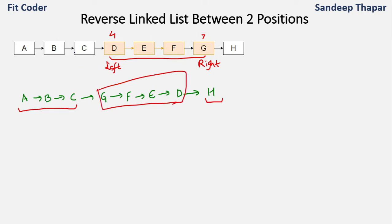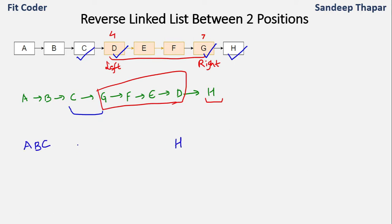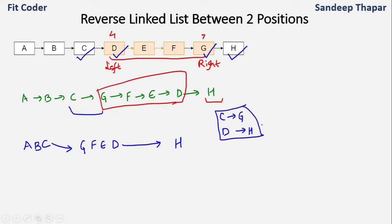If we look carefully, we need four pointers for this entire operation: a pointer to C (the node before left), a pointer to D (the left node), a pointer to G (the right node), and a pointer to H (the node after right). The pointer to C is needed to connect C to the reversed part, making a link from C to G. We also need to connect D to H. Once we have these four pointers and know the logic to reverse a linked list, we can solve this.